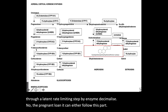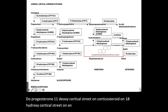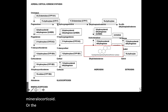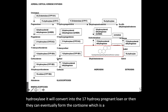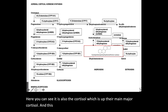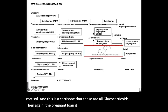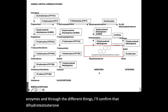The pregnenolone can follow different pathways: to progesterone, 11-deoxycorticosterone, corticosterone, hydroxypregnenolone, and eventually form cortisone, which is a glucocorticoid, or cortisol, which is the major glucocorticoid. Pregnenolone can also form, through different enzymes, dihydrotestosterone, estriol — these are all androgens, estrogens, and sex hormones.